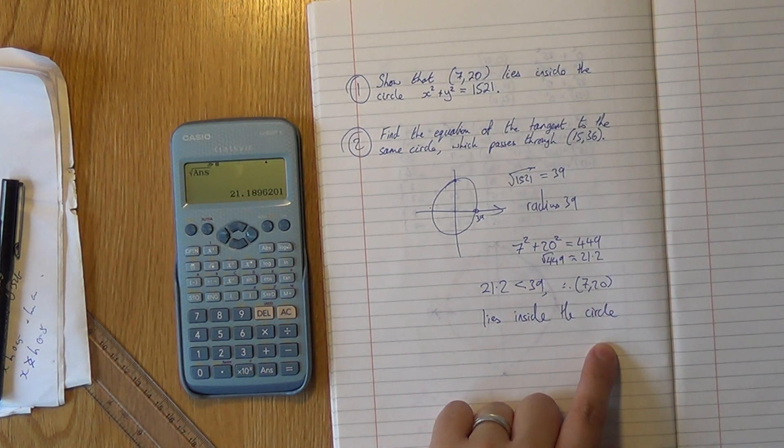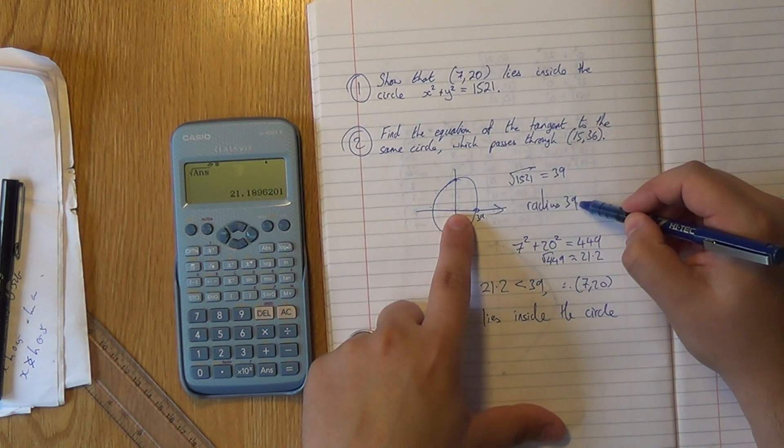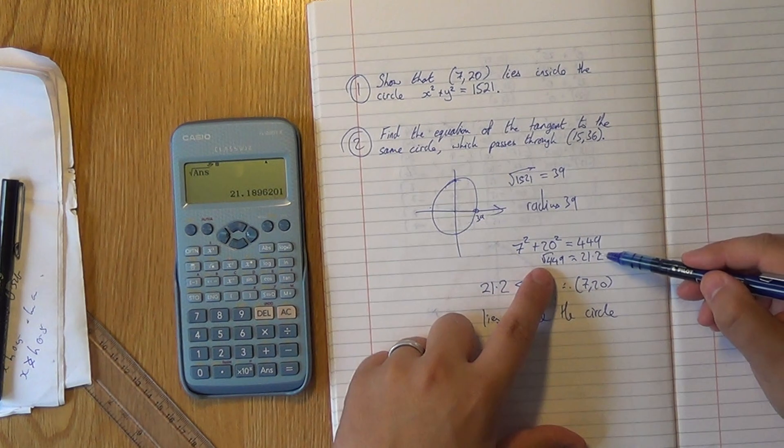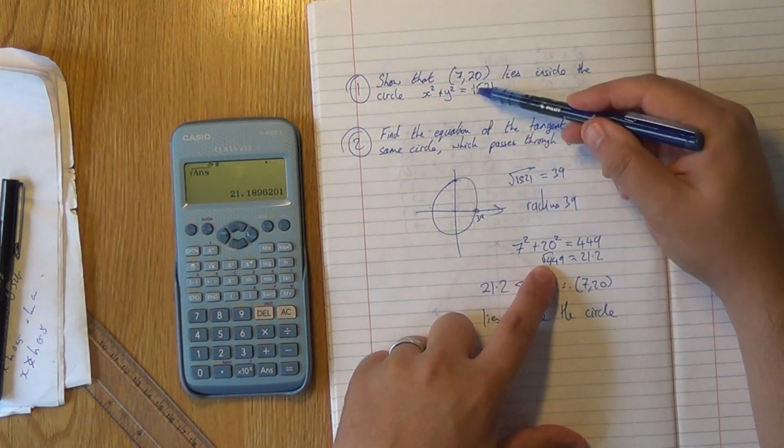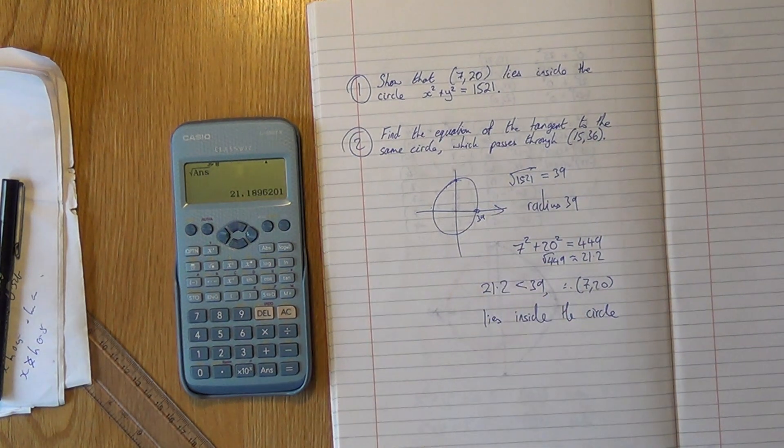And that is part one done. We had to find the radius of the circle, and we had to calculate the distance of this coordinate from the origin. And because it was less than the radius, it must be inside the circle.